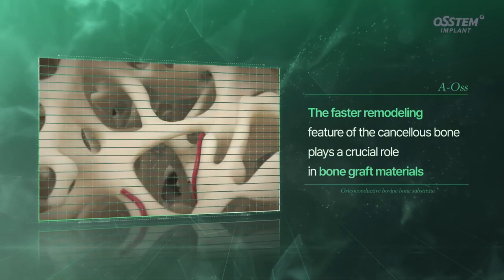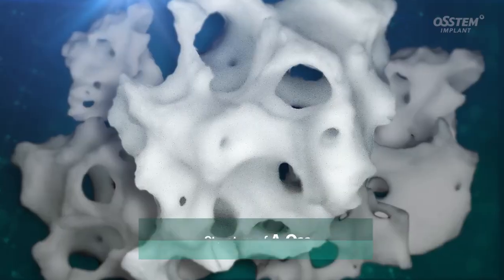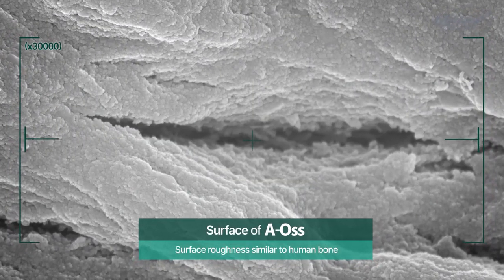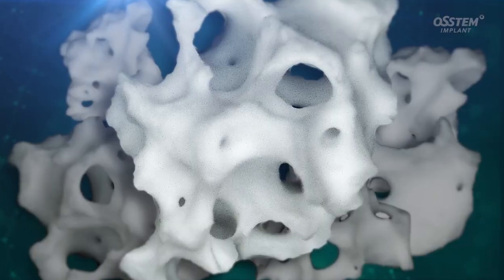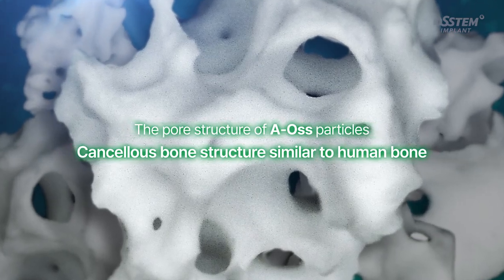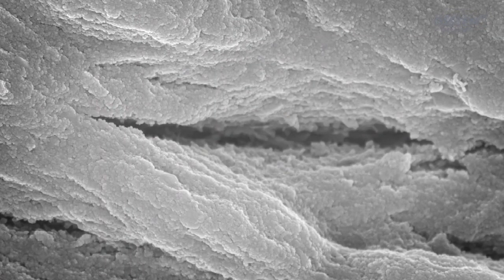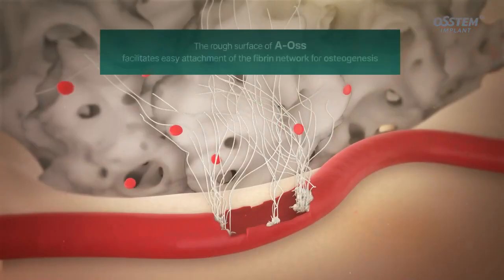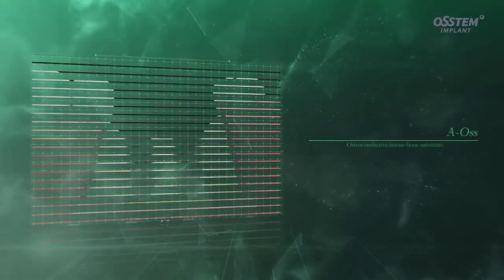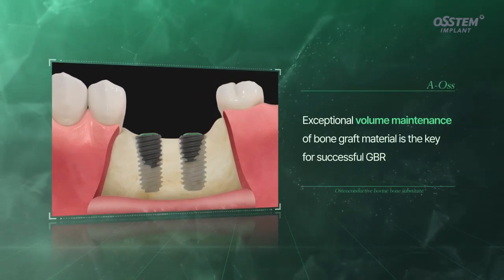For bone graft materials, it is important to have a faster remodeling feature. Similar to the human bone, AOS particles have a cancellous pore structure and contact surface. The pore structure of AOS particles, which is similar to human cancellous bone, helps establish a suitable environment for blood flow, and the rough surface facilitates easy attachment of the fibrin network, helping osteogenesis. Exceptional volume maintenance of bone graft material is the key for successful GBR.